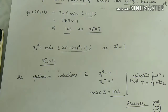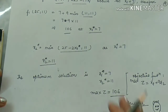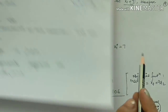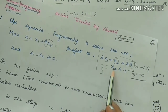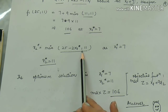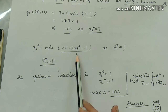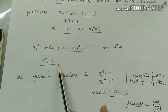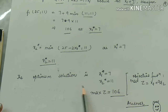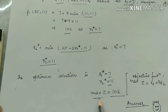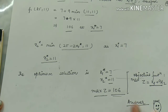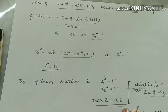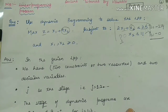So x1* = 7. To cross-check x2: putting x1 = 7, we compute min(25 − 2×7, 11) = min(11, 11) = 11, confirming x2* = 11. So x1 = 7 and x2 = 11. Putting these optimal values into the objective function, we obtain the final value of Z.